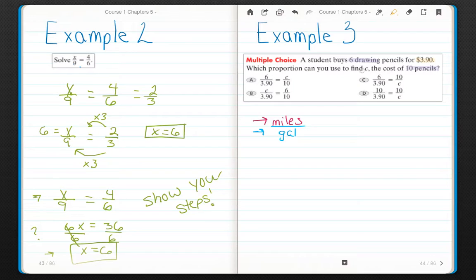Cost. And C. Cost. That's what I don't know. So I'm going to set this up. I see 6 over $3.90. 6 pencils for $3.90. Equals C over 10.